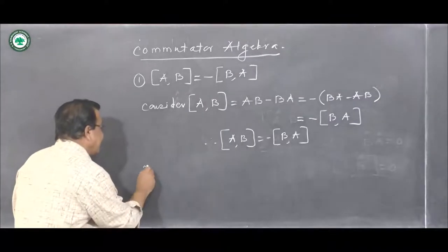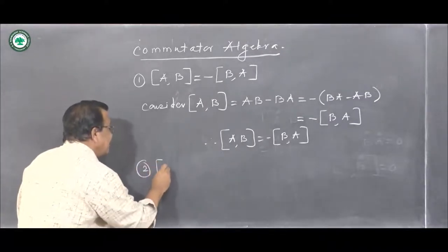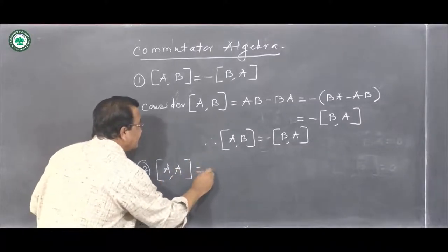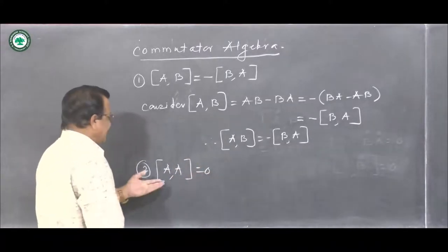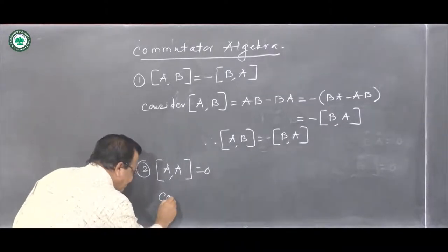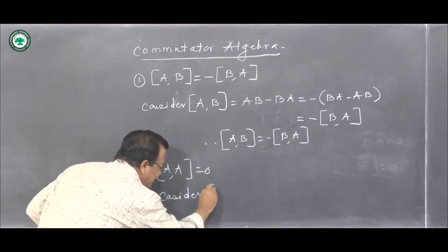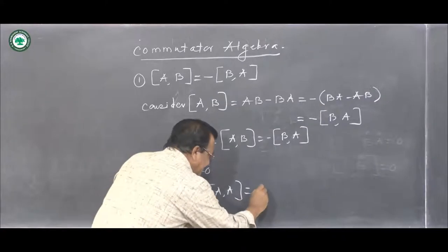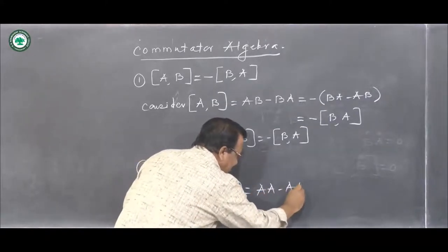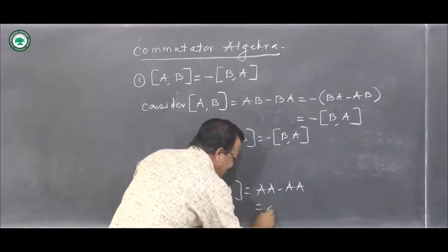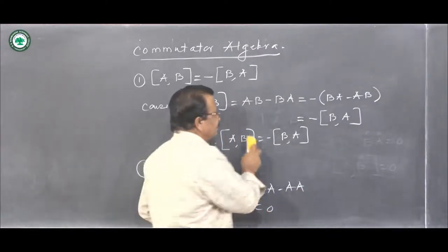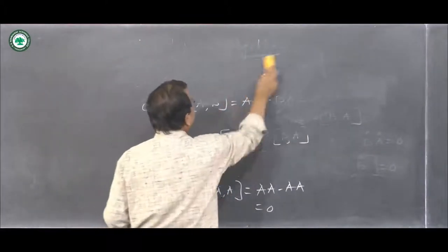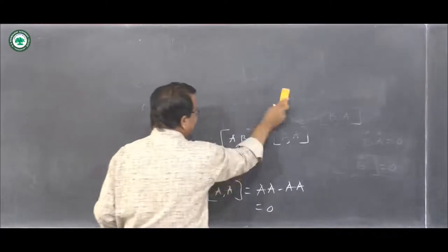The second property is: the commutator of A with A, or [A, A], is obviously zero. This can be easily proved because the forward product is AA and the reverse product is also AA, so this is obviously zero. The commutator of an operator with itself is zero.